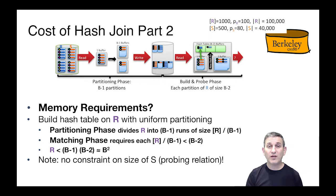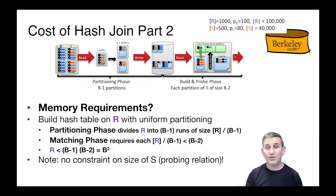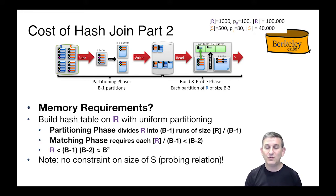What about the memory requirements for hash join? We build a hash table on R and hope for uniform partitioning. In the partitioning phase we divide R into B minus one runs of hopefully equal size, each of size |R| / (B - 1). In the matching phase we need each partition of size |R| / (B - 1) to fit into B minus two blocks of memory in order to avoid recursive partitioning.